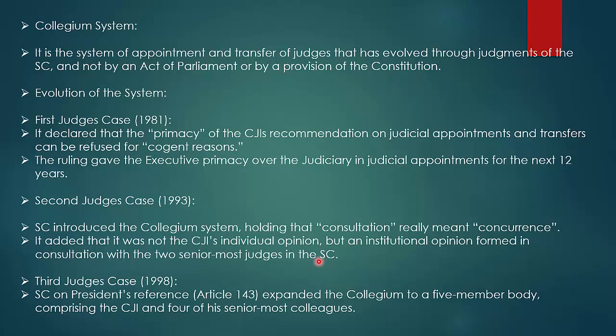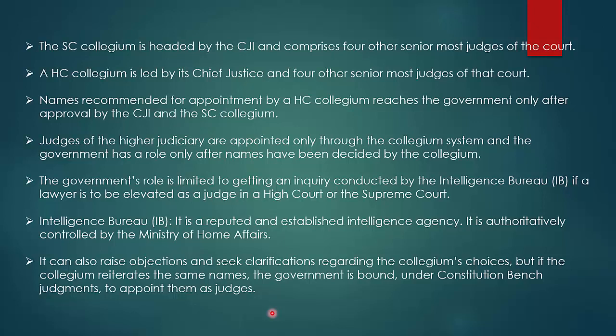It added that it was not the CJI's individual opinion, but an institutional opinion formed in consultation with the two senior-most judges of the Supreme Court. 1993 mein teen judges ki ek committee banayi gayi — chairman the CJI aur do senior-most judges of the Supreme Court. Usko naam diya gaya Collegium system. 1998 mein, President ke reference pe, three-member committee ko paanch-member committee banaya gaya aur do senior-most judges ki jagah chaar senior-most judges ko Collegium system mein dala gaya — which became the Third Judges Case of 1998.